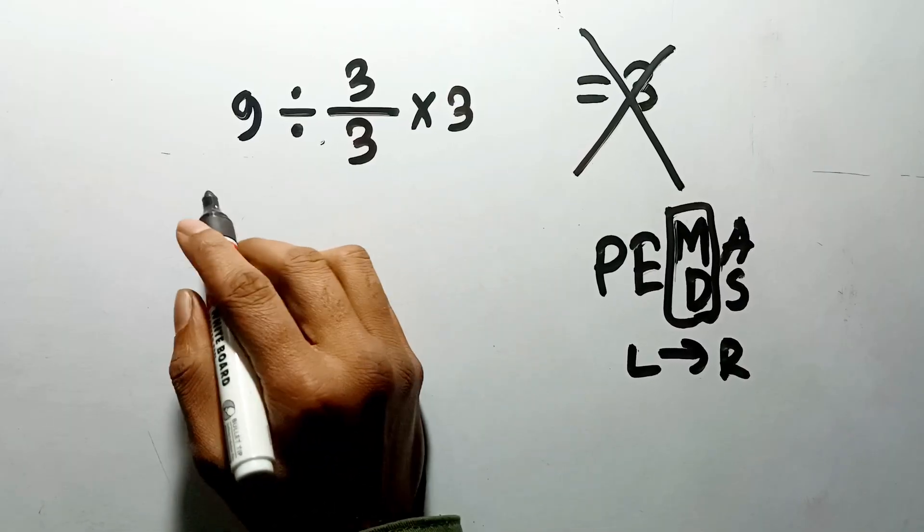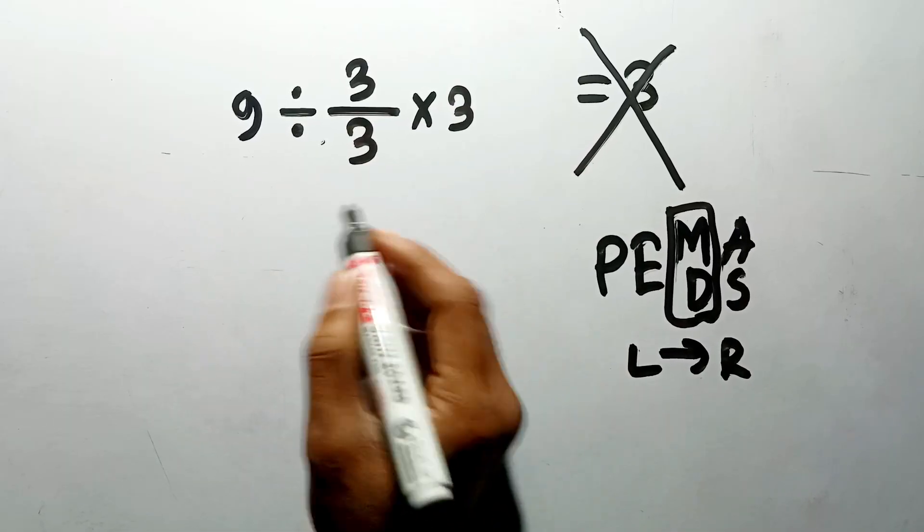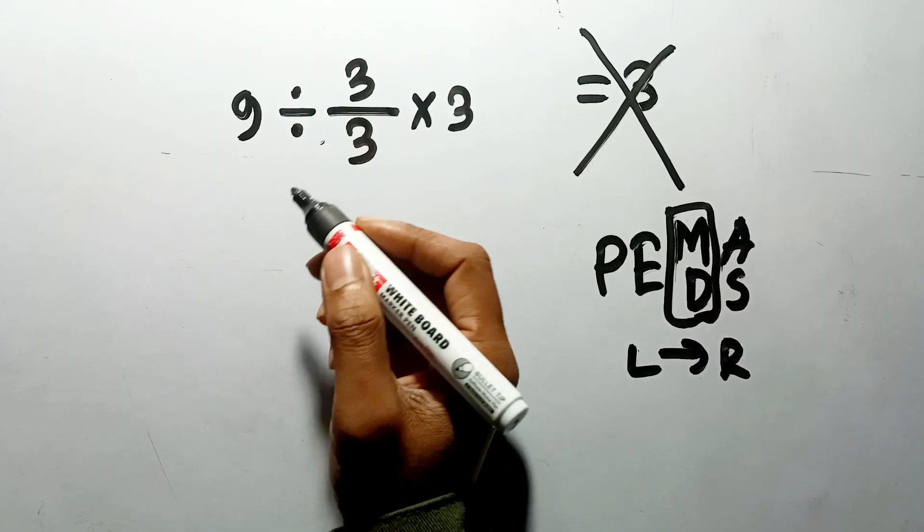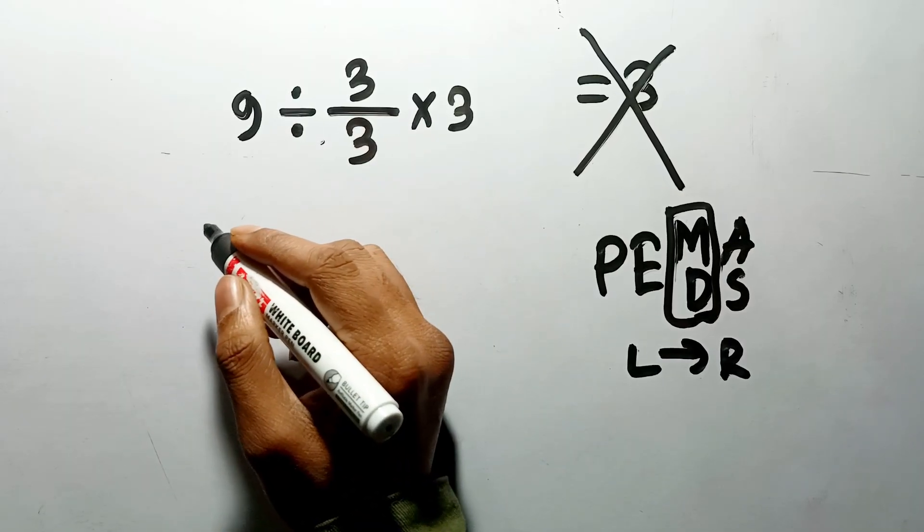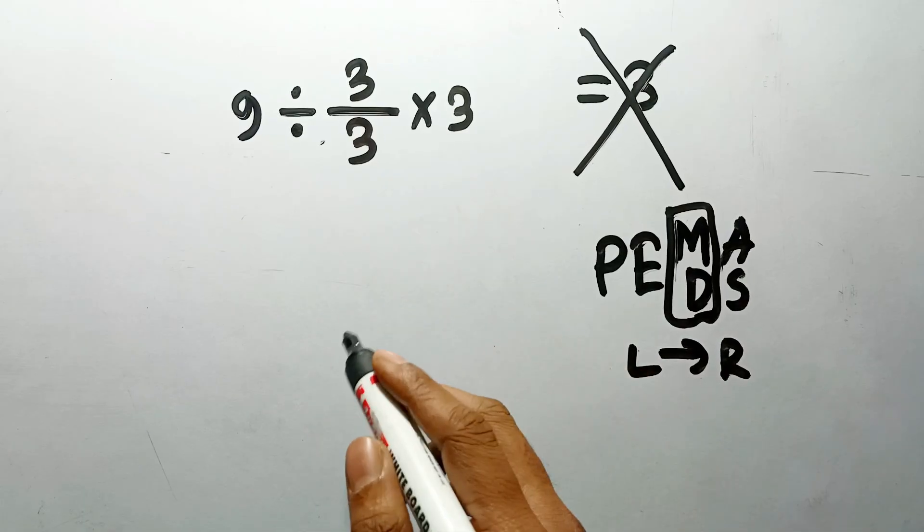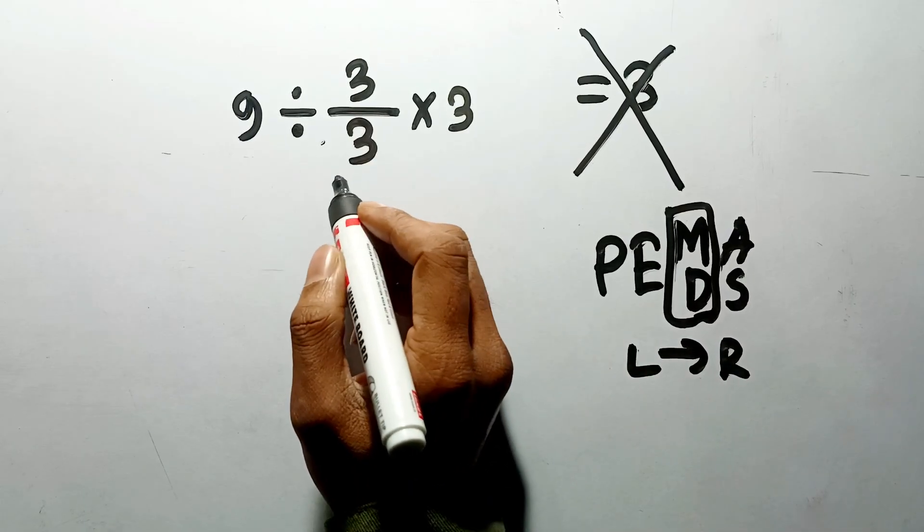Okay, so according to the PEMDAS, first we have to do this fraction, then the division, and finally the multiplication. If we do the division straight across from left to right, before handling the grouping of the fraction, it is wrong.